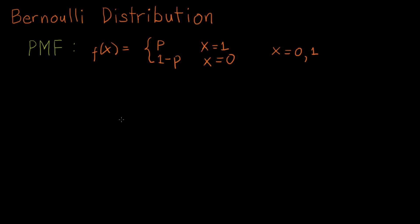Hello, guys. In this video, I'm going to show you how to derive the mean, the variance, and the moment-generating function of a Bernoulli distribution. Bernoulli distribution is a discrete distribution with its probability mass function shown here. f(x) equals p when x equals 1, and it equals 1 minus p when x equals 0. So x has two values, 0 and 1.